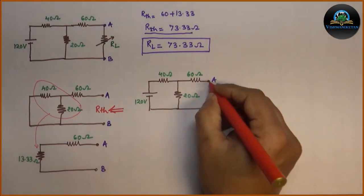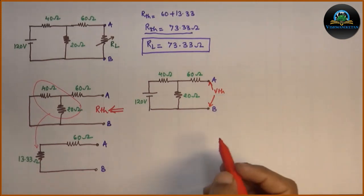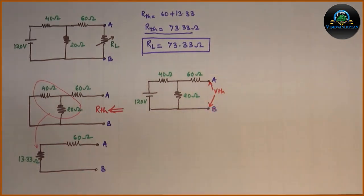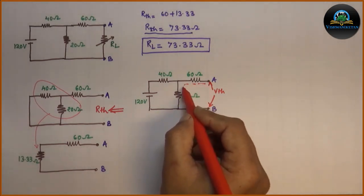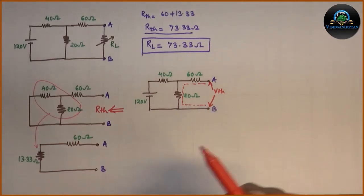The VTH will be voltage across the open circuited terminals, that is AB. For calculation of VTH, we will follow the path from A to B, which is shown by this dotted line.